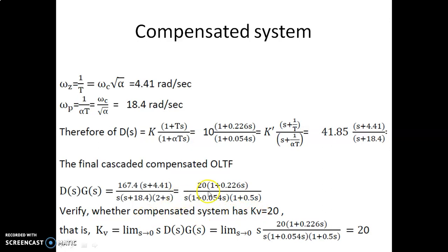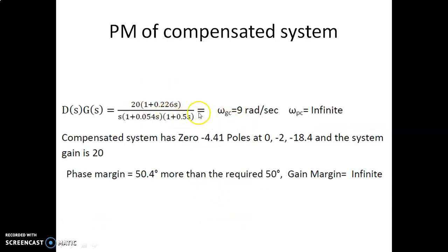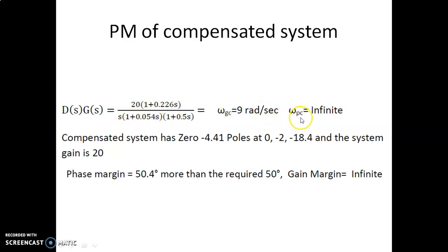To verify whether this satisfies Kv equal to 20, we use the open loop transfer function of the compensated system and apply the limit as s tends to zero of s times D(s) times G(s). This comes out to be 20, as required. It is also verified that the new ωgc will be 9 radians per second. The compensated system has a zero at minus 4.41, poles at origin, minus 2, and minus 18.4, with a system gain of 20, resulting in a phase margin of 50.4 degrees — which is more than the required 50 degrees. The gain margin is infinity.